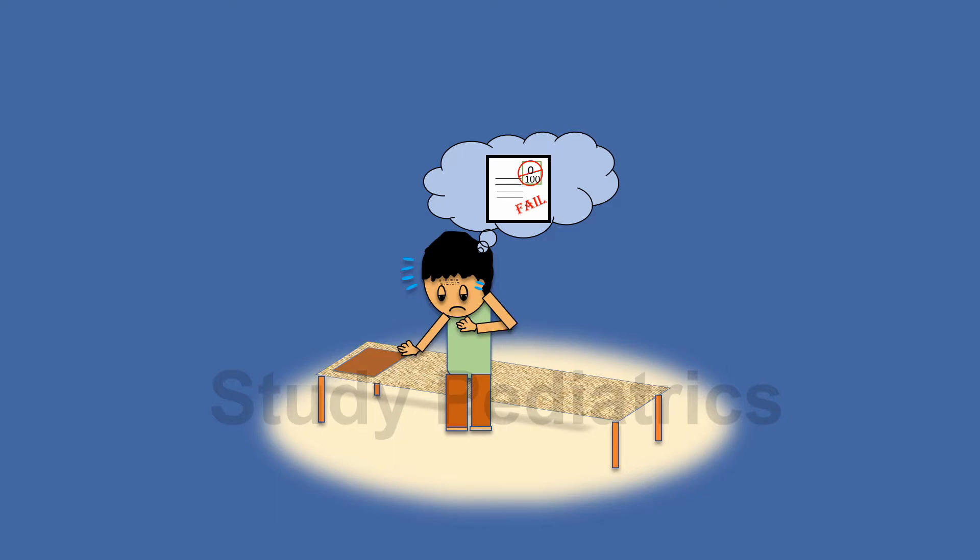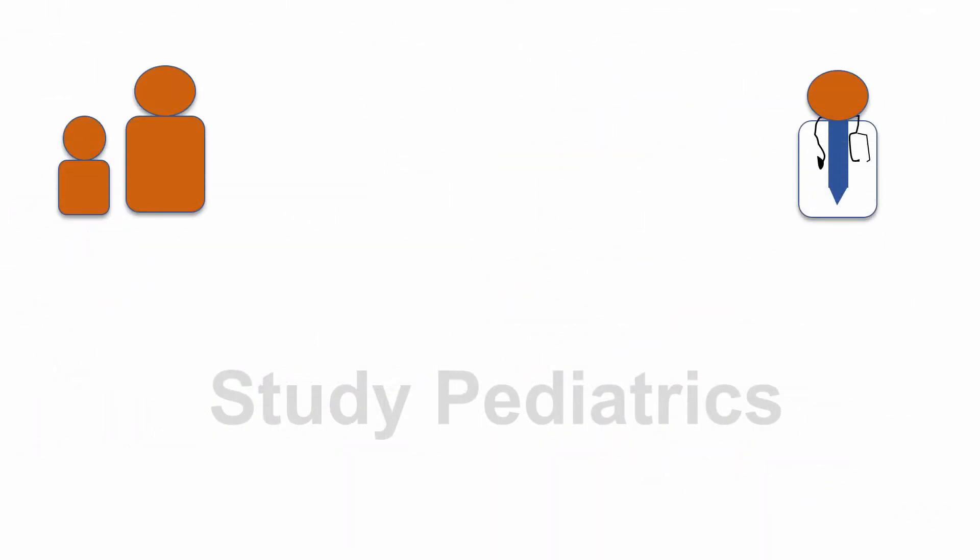The next day as usual happens, but this time Jim's teacher takes it more seriously and with the help of his parents takes him to a pediatrician. The doctor tells that seeing the history of this child, it suggests of absent seizures.